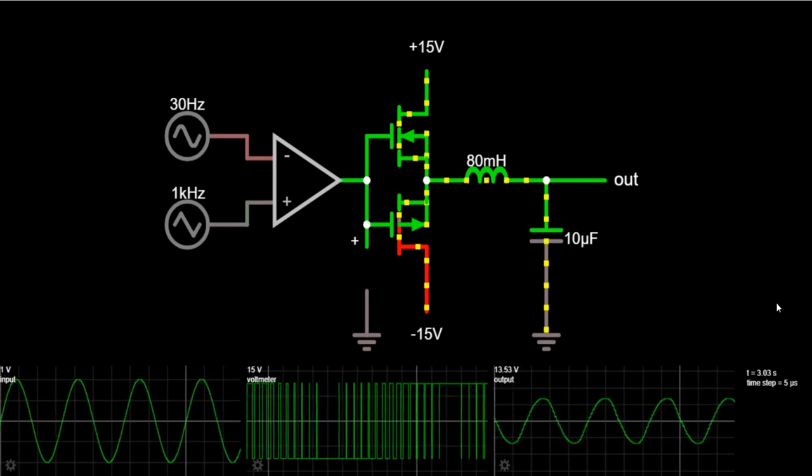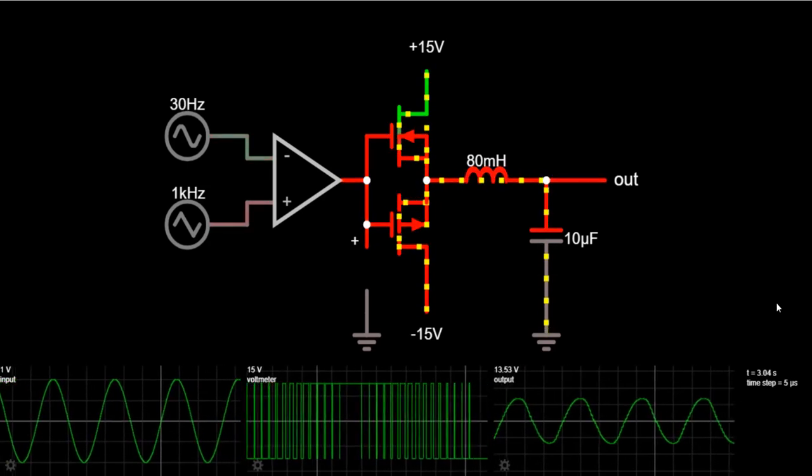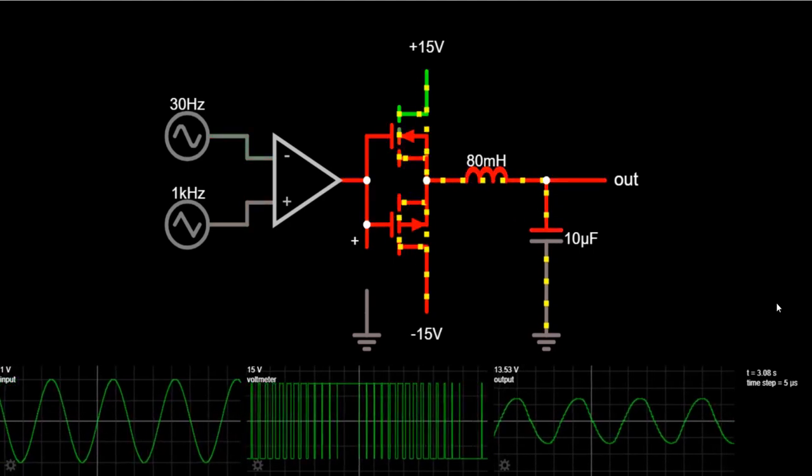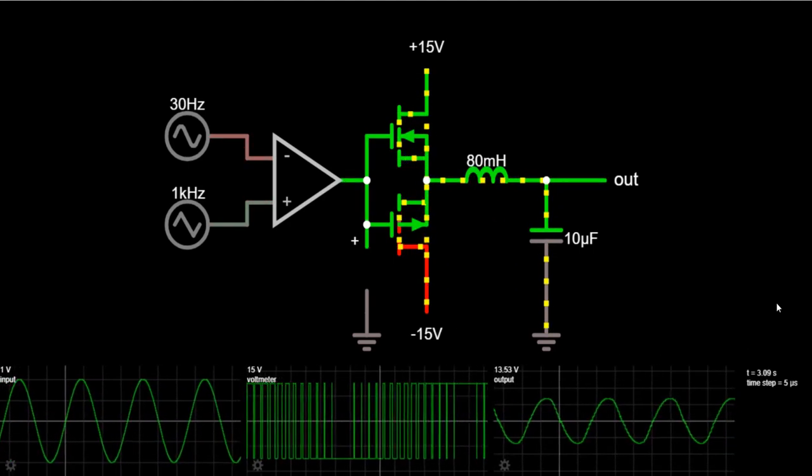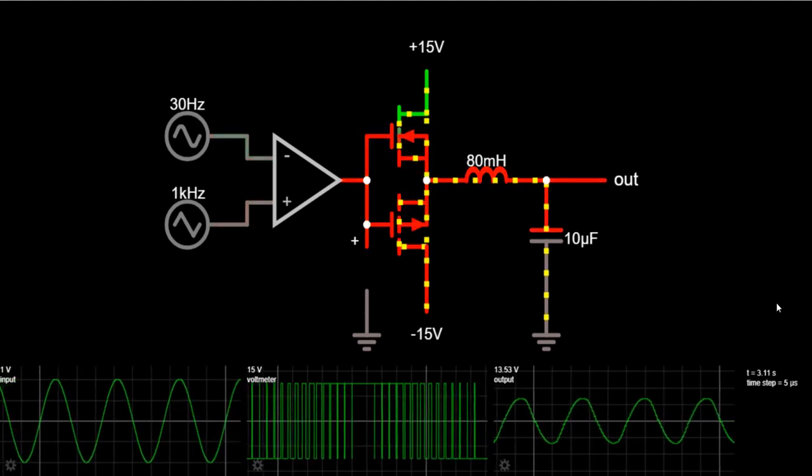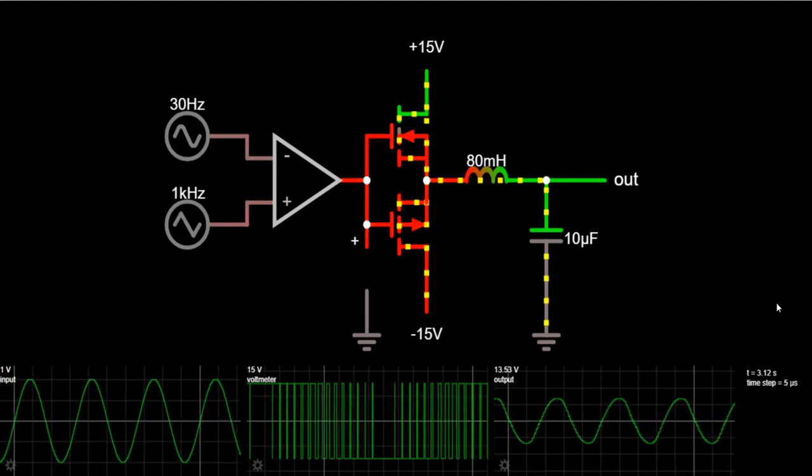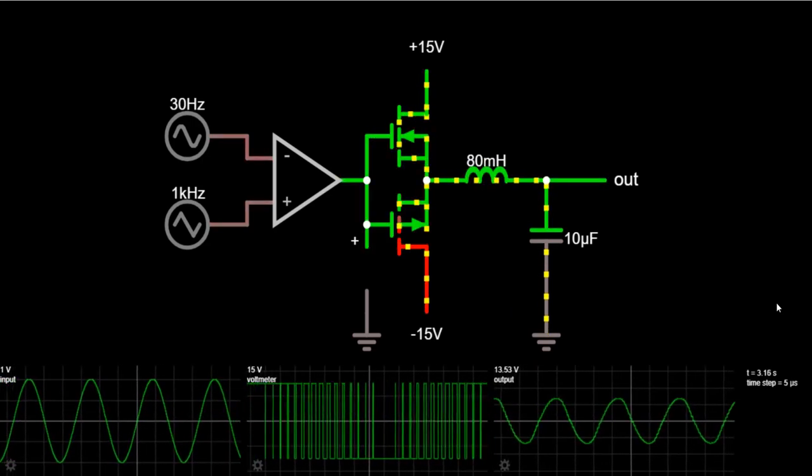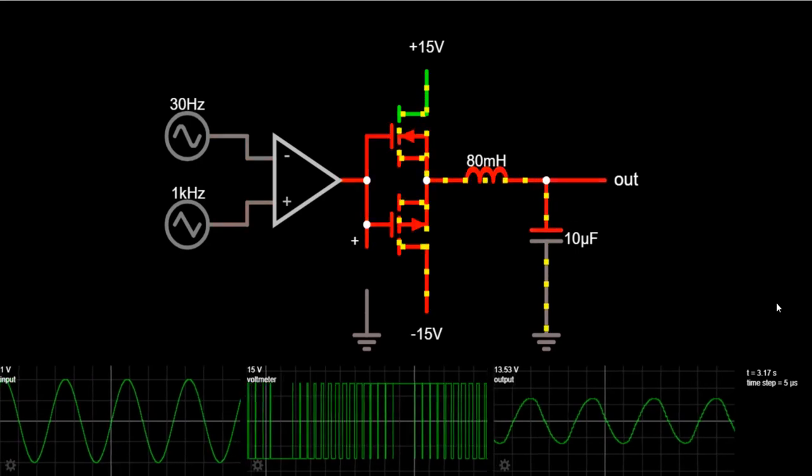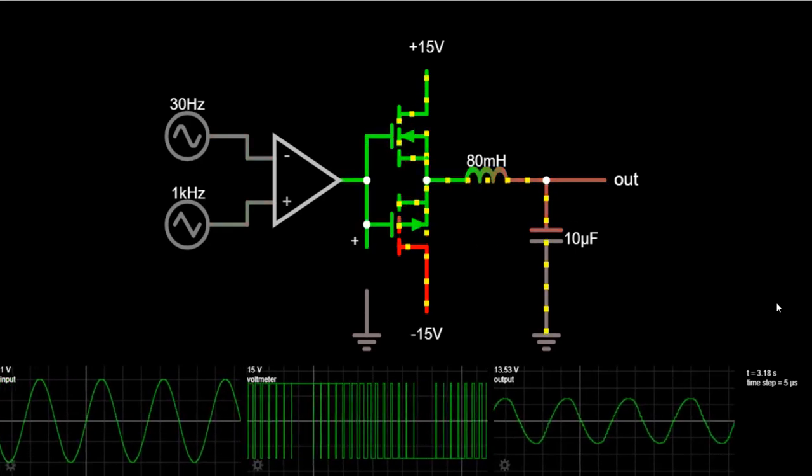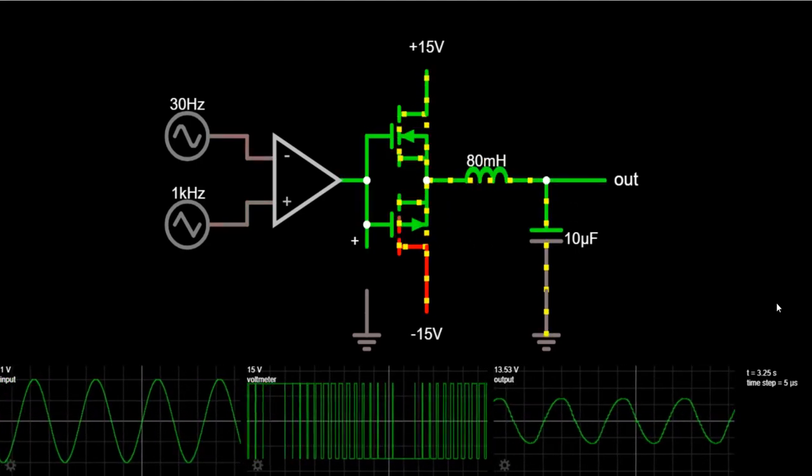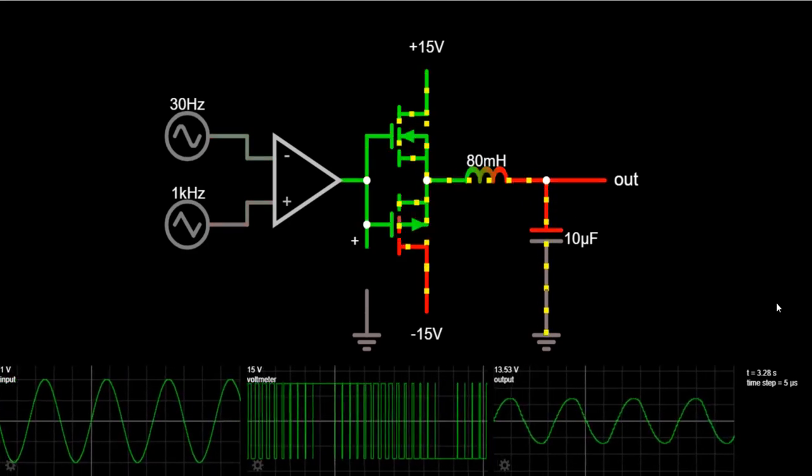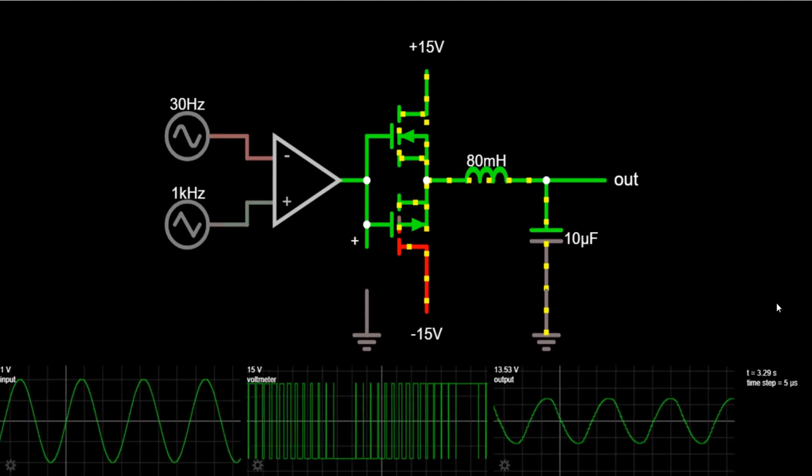While in other amplifiers these amplifying devices act as linear gain devices, in class D amplifiers they operate as switches. You should also know that class D amplifiers are very efficient amplifiers. Actually, the efficiency of class D amplifiers can exceed even 90 percent.